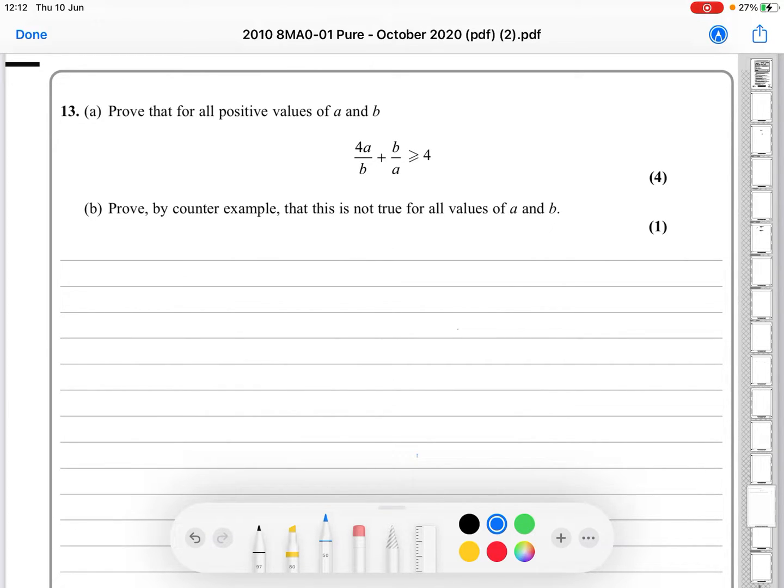So basically, whenever you see a greater than or equal to sign in your head, you've got to be thinking, can I make it greater than or equal to, which means maybe I need a square in some way.